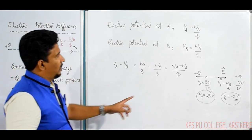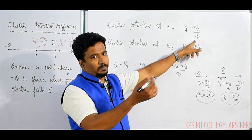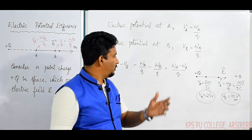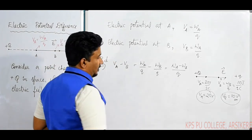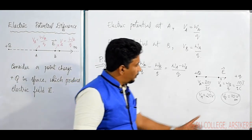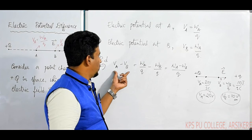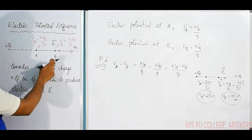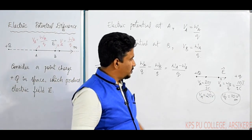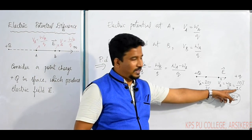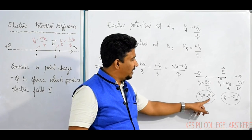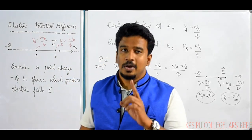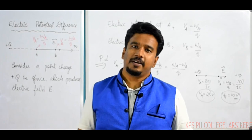Electric potential is work done per unit charge in bringing the charge from one point to another point — from infinity to a point, that gives potential; between two points, that gives potential difference. Potential difference is always higher potential minus lower potential.